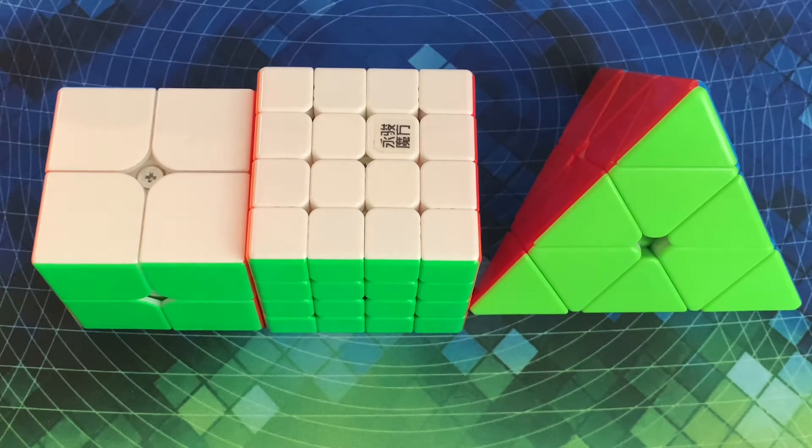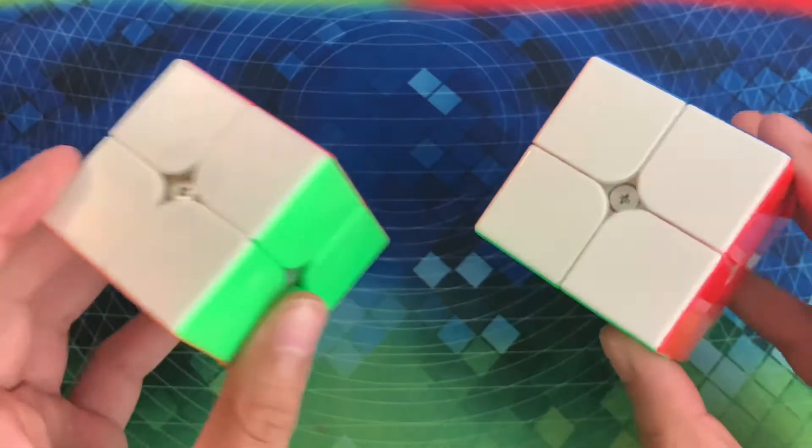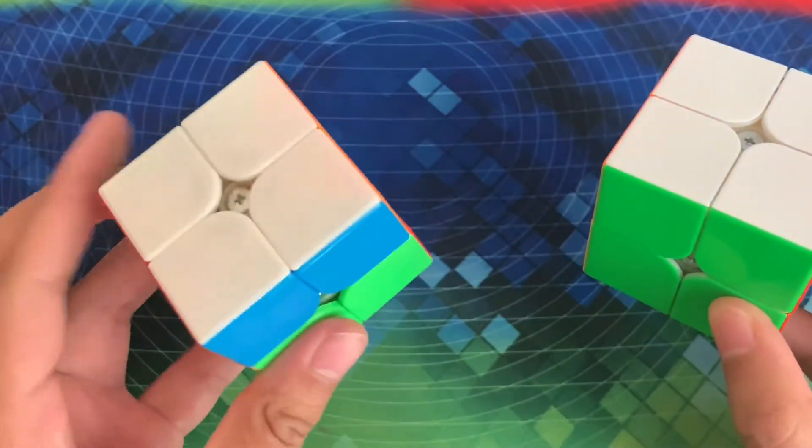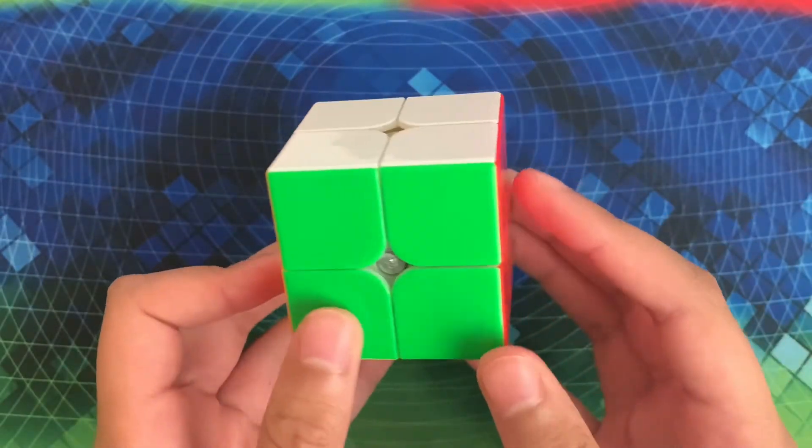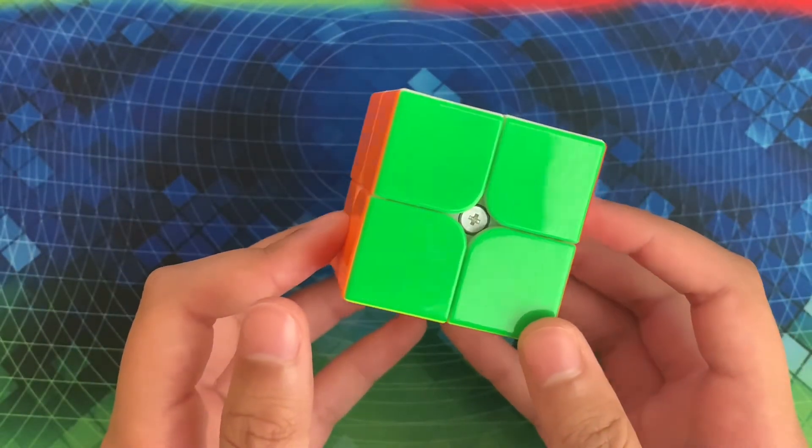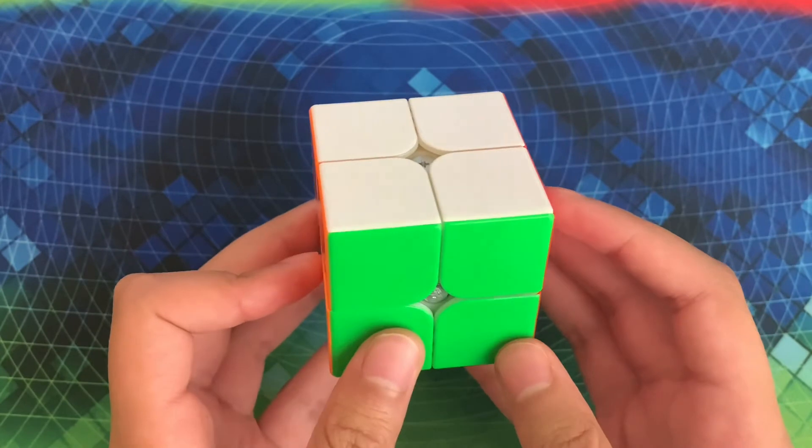I'm really excited, so let's get into my mains and goals. For 2x2, my main is this MGC Elite 2x2, and my backup is the Pro Shop MGC. My goal is to get a sub-5 single and a sub-5.5 average. However, if the scrambles are bad, I'll be fine with a sub-6 average.